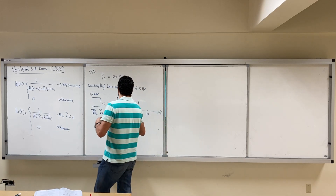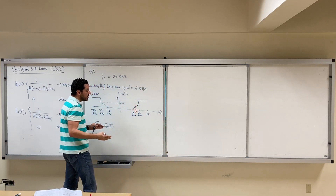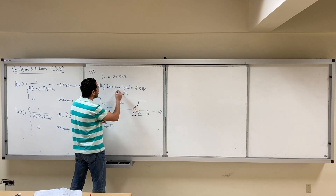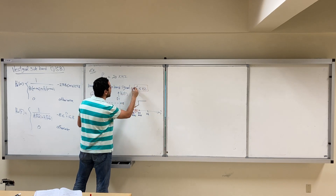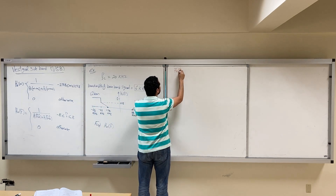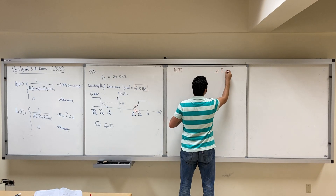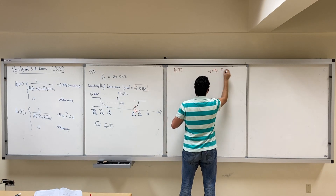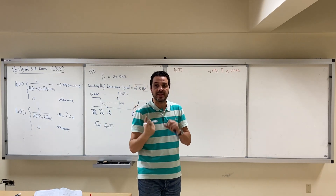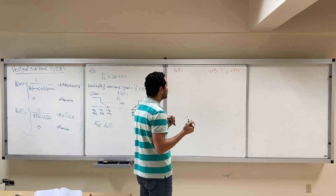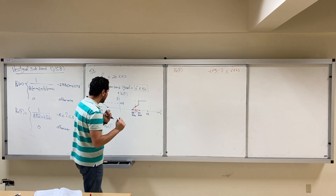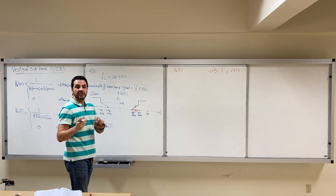From this filter we need to calculate H_node(f). Keep in mind that the bandwidth of the baseband signal is 6 kilohertz, so we care about designing H_node(f) that will exist between minus 6 kilohertz to 6 kilohertz. This is the band of interest, which is the bandwidth of our baseband signal.